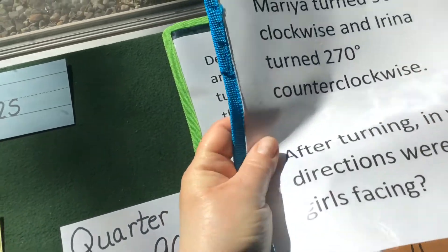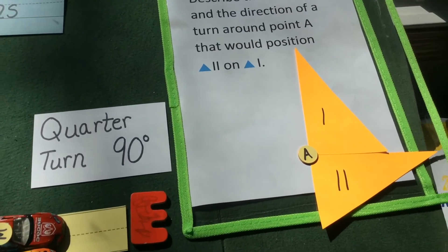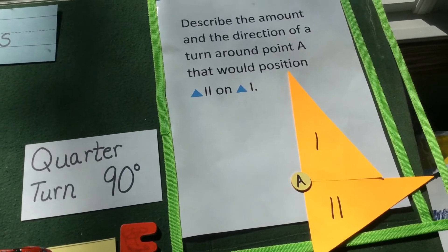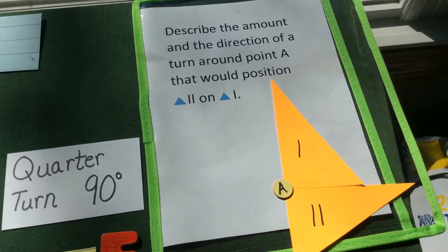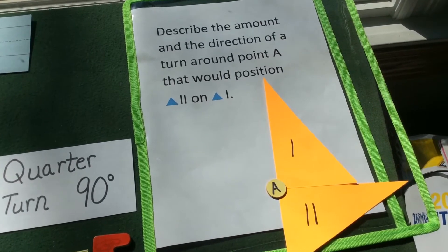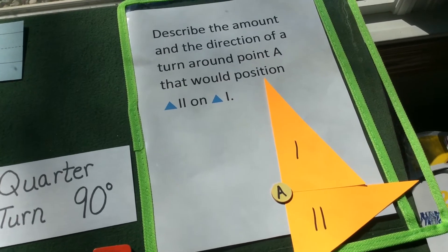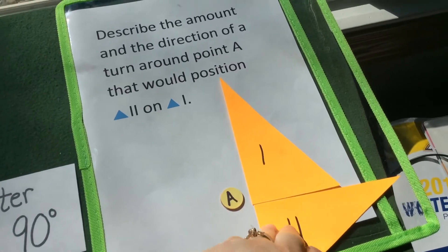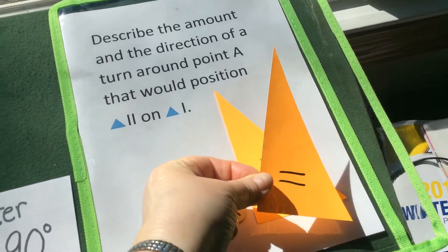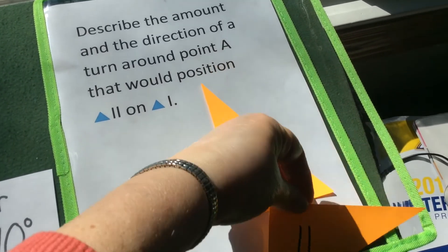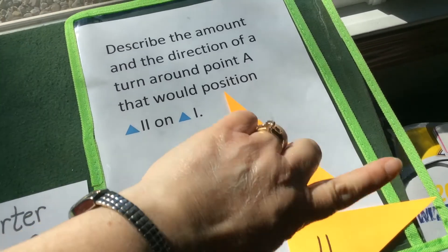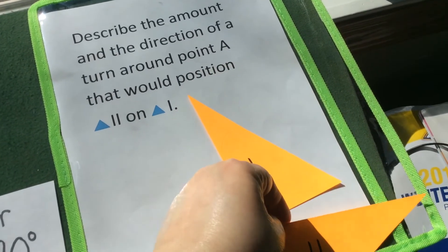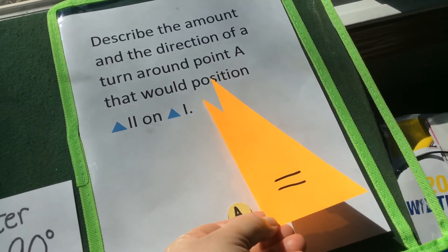Let's look at another problem. This time we're looking at some triangles — triangle 1, triangle 2, and a point A. It says: describe the amount and direction of a turn around point A that would position triangle 2 on triangle 1. We move triangle 2 using point A as our pivot point. Turning it this way — going left — is counterclockwise, and the angle is 90 degrees. So it's 90 degrees counterclockwise.